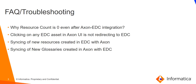The third FAQ: syncing of new resources created in EDC with Axon. People often ask: if I create a new resource in EDC, how will Axon fetch it? Axon makes REST API calls to EDC at regular intervals, so any resource you create in EDC will appear in the Axon UI immediately when you return to it. Similarly, if you create a new glossary in Axon, you need to run the scanner again on the EDC side for that Axon-type resource to fetch the new glossary. Once the scanner runs, all glossaries present in your Axon instance will be fetched for your EDC instance.